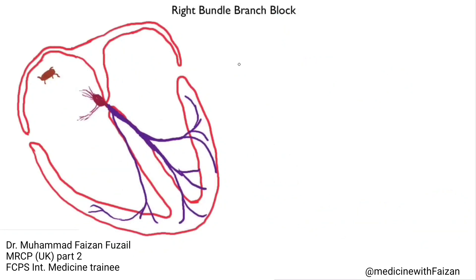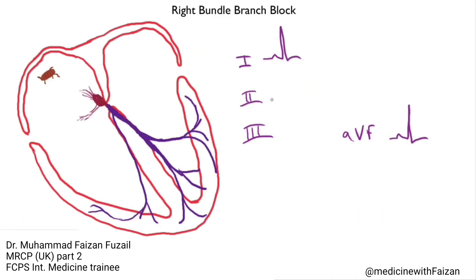Let's get a little more specific. If you're looking at the limb leads — 1, 2, and 3 — a normal QRS complex is going to be upright in lead 1 and in AVF, assuming a normal axis. Lead 2 will generally be a little bit taller than lead 1, because the axis usually runs down into the left. And lead 3 will often be a bit smaller, because lead 3 is looking in that direction.